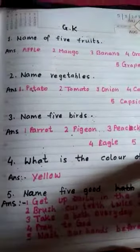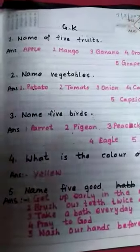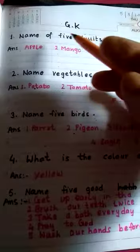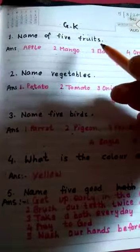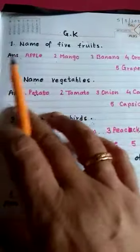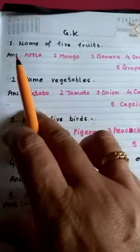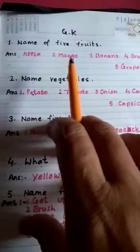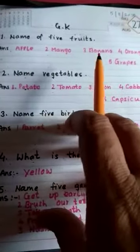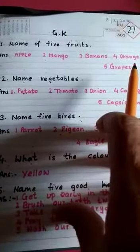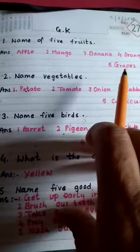Next, question number 1. Name of 5 fruits. You will say, Apple, Mango, Banana, Orange, Grapes.